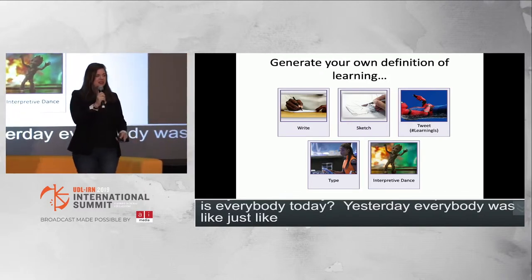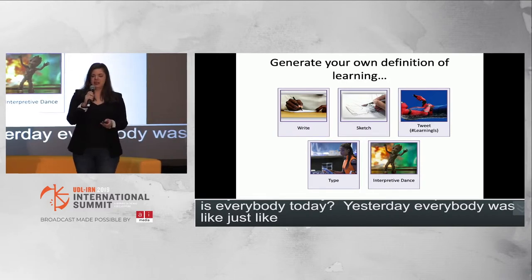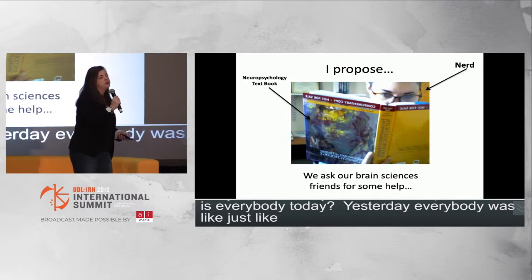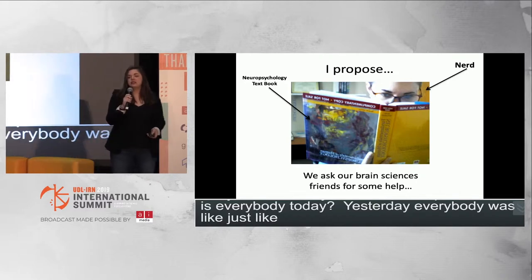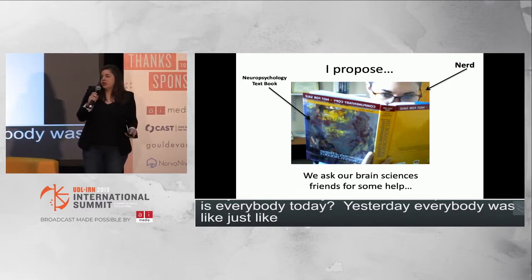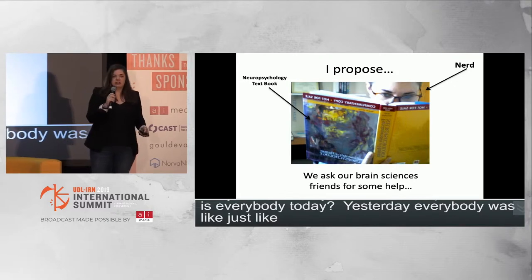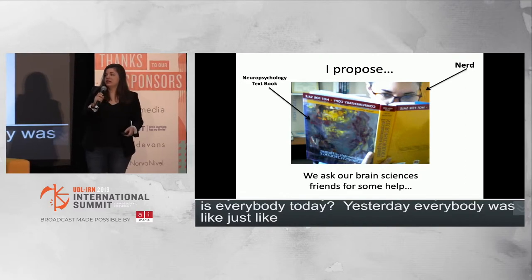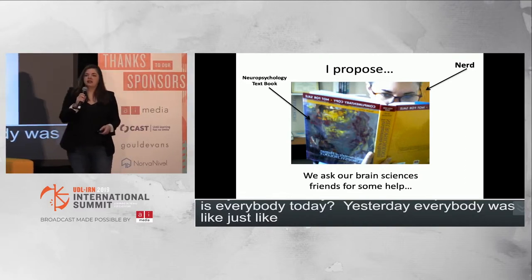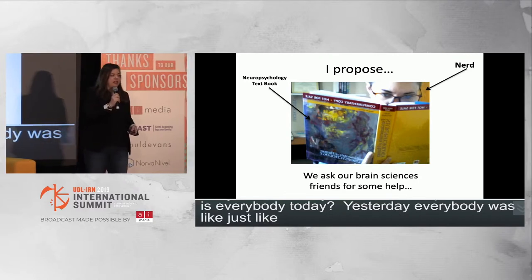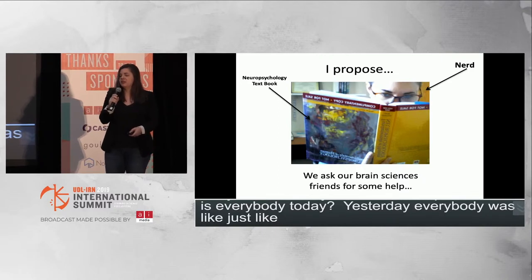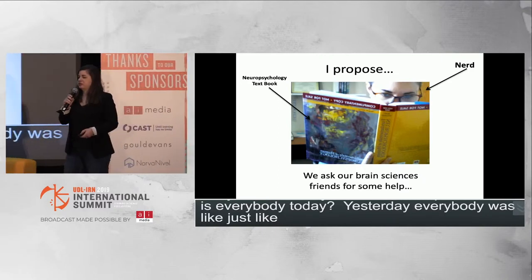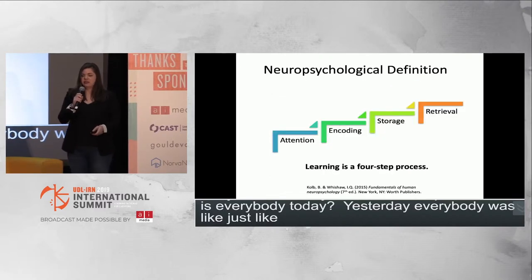We're going to come back to your conversations because I want those to continue. But I'm going to give you a definition I'm proposing — not telling you this is the definition, just a proposal for a direction we can go in. Since UDL is written in part from neuroscience — specifically mostly neuropsychological research — I went and asked our neuroscience friends how they define learning. That direction encompasses cognitive, neurobiological, and developmental aspects.